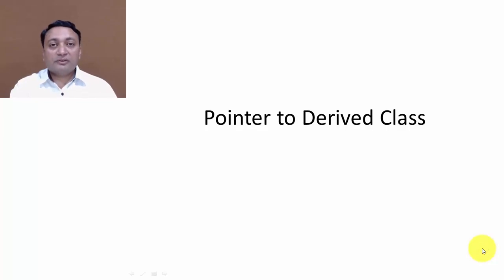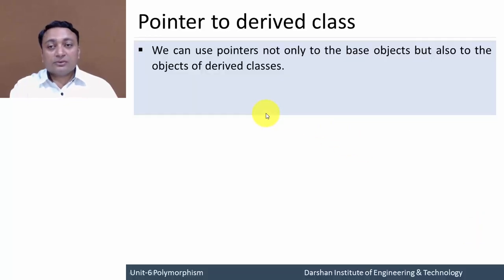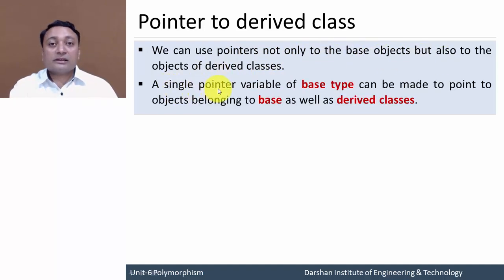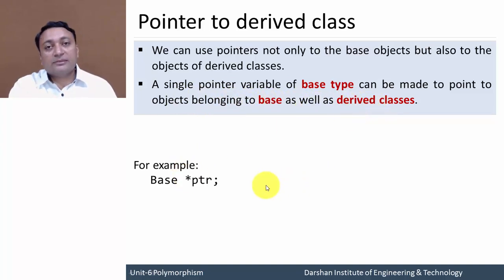In our previous lectures we have discussed pointer to variable, pointer to array, pointer to member functions and members of class. Now let us discuss pointer to derived class. We can use pointers not only to base objects but also to the objects of derived classes. A single pointer variable of base class, or base type, can point to objects belonging to base as well as derived classes.